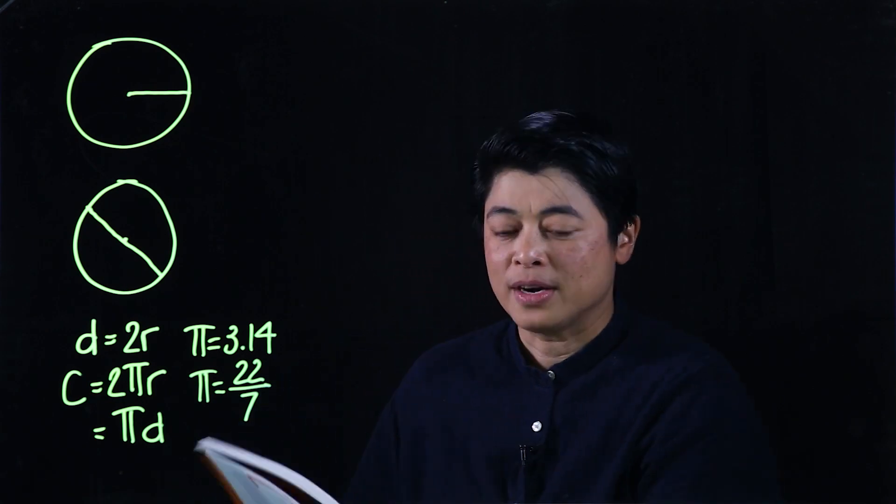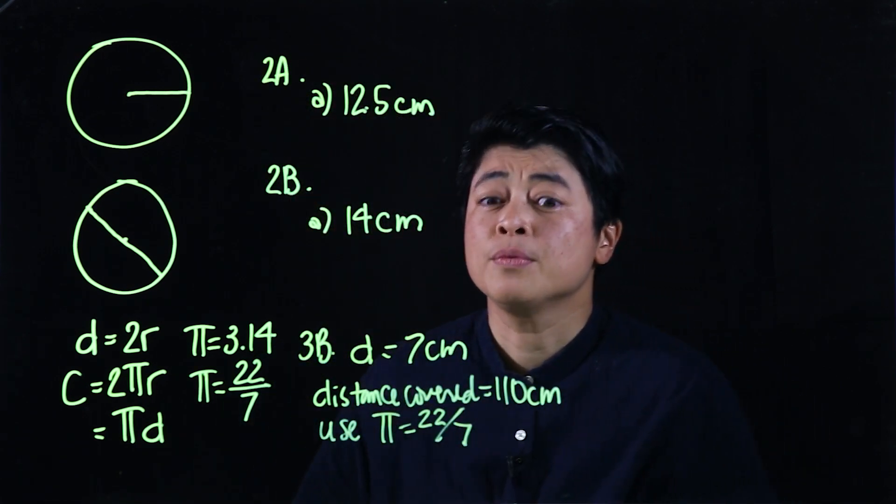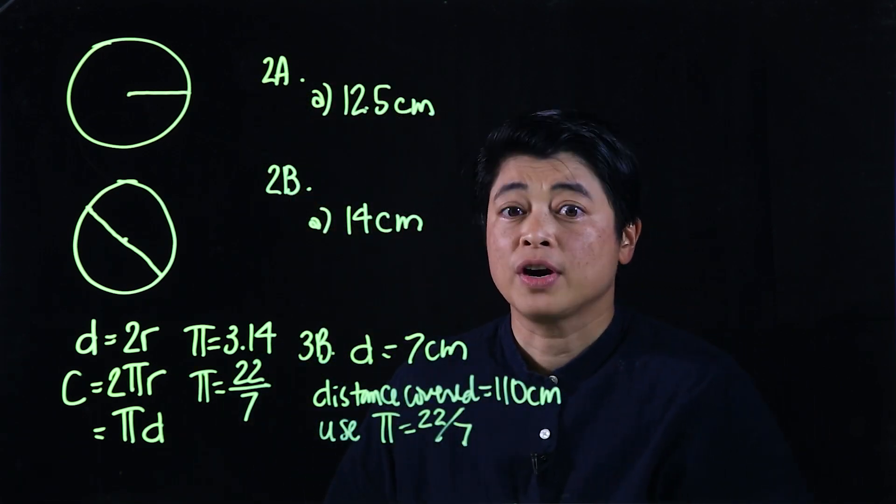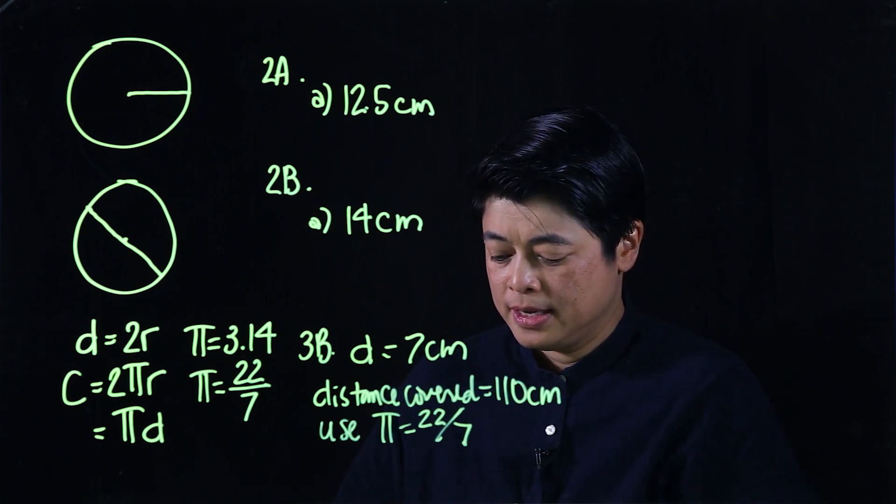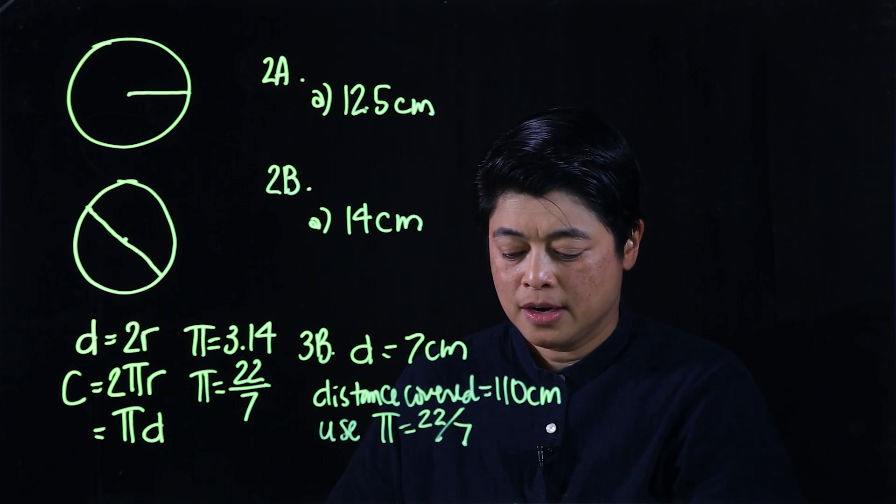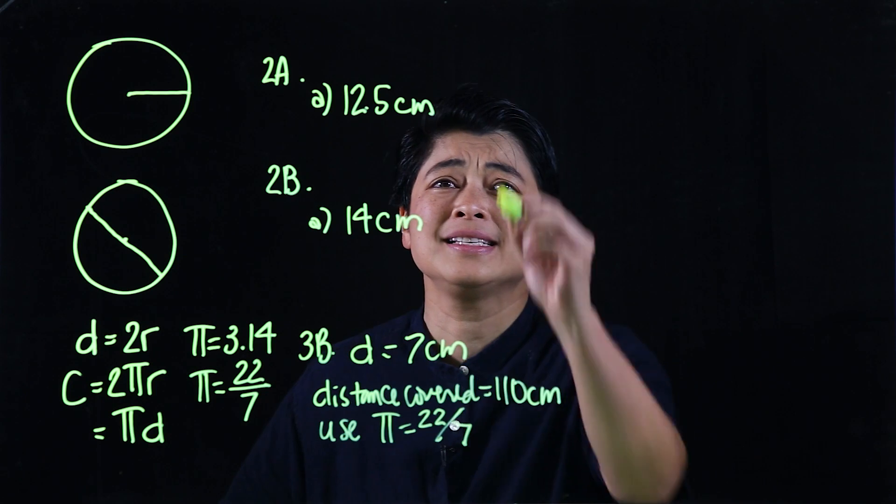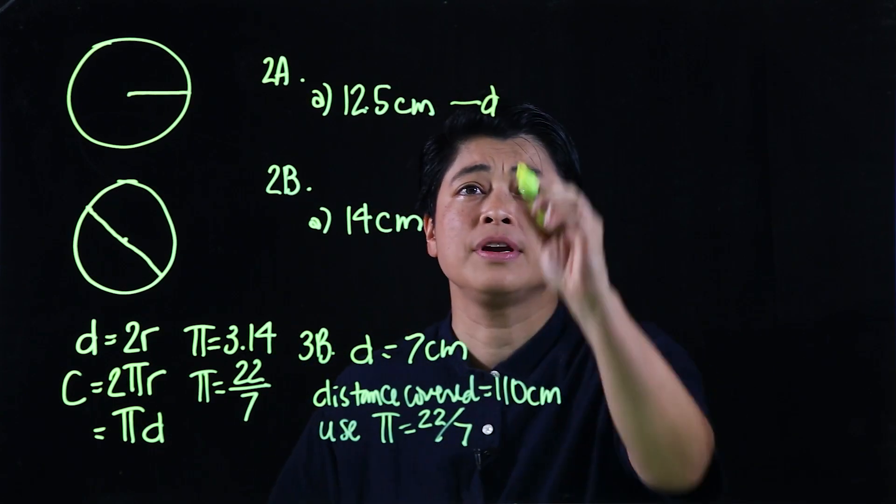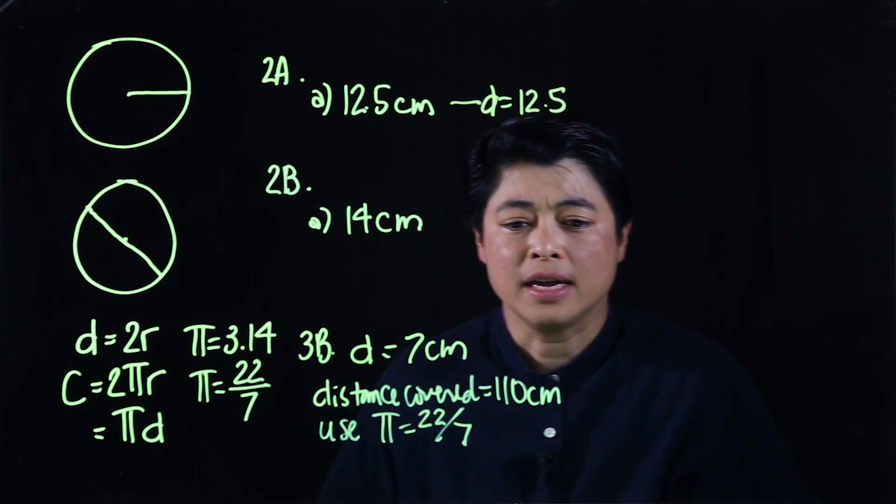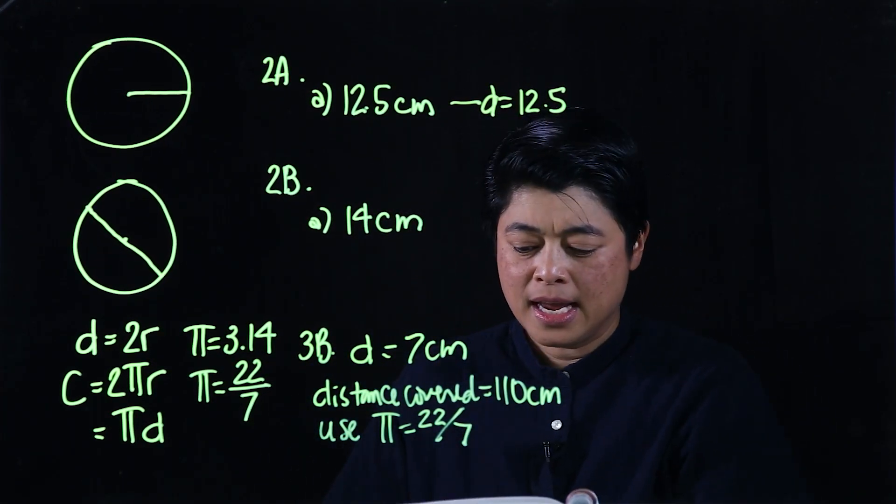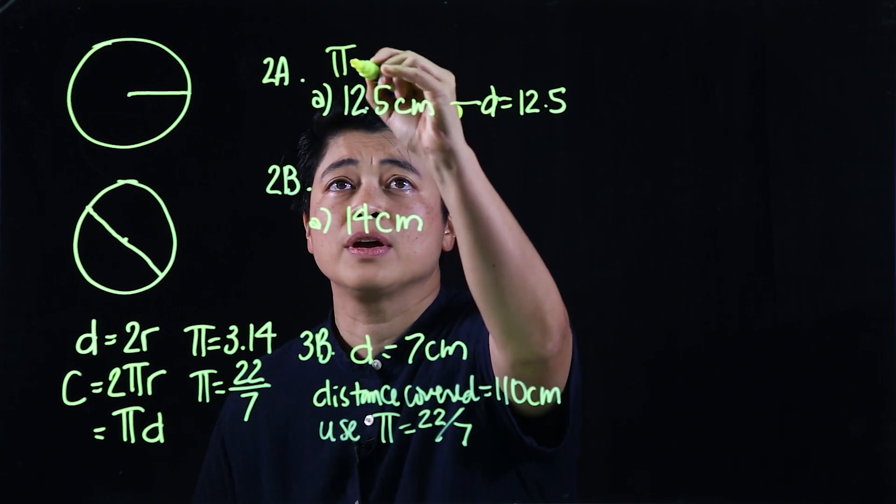Let's begin with 142. Starting with page 142, it says find the circumference of the circle with the given diameter. So that means this is the diameter, 12.5.